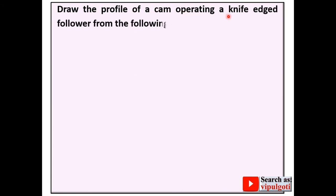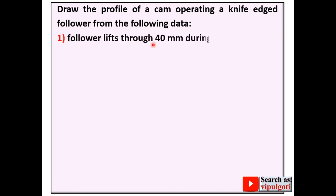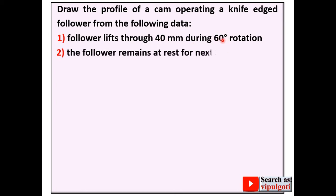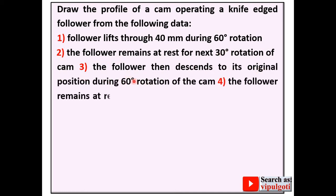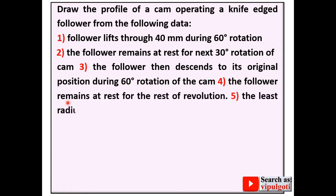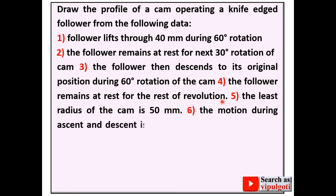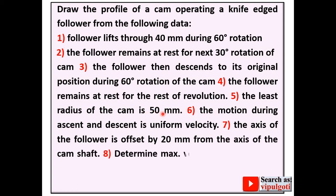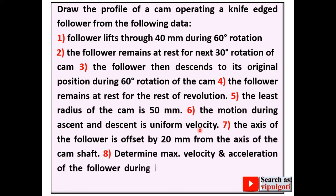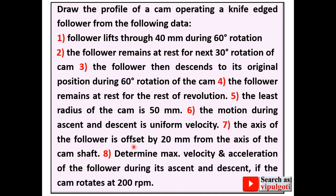Draw the profile of a cam operating a knife-edge follower from the following data. The follower lifts through 40 mm — that is the stroke length — during 60 degree rotation, which is the ascent angle. The follower remains at rest during the dwell period, then descends to its original position during the descent angle, then remains at rest during the raised dwell period. The least radius of the cam is 50 mm, which is the minimum cam radius for the base circle. The motion during ascent and descent is uniform velocity. The axis of the follower is offset by 20 mm — this is very important data, so you have to draw the offset circle.